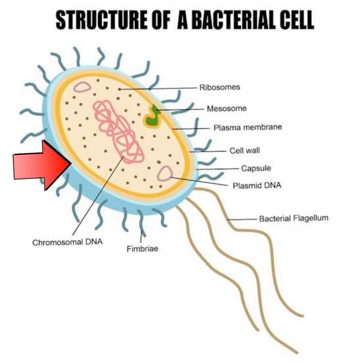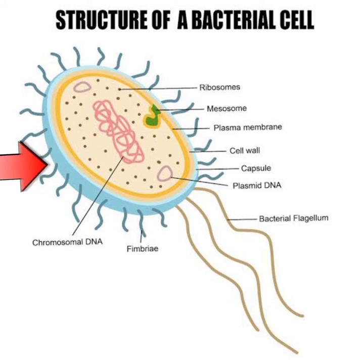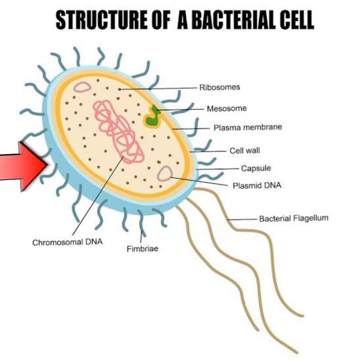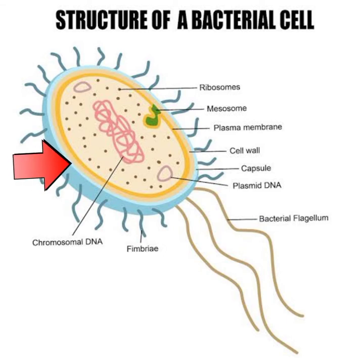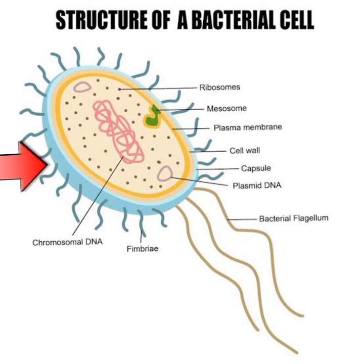Some pathogenic bacteria like E. coli and Streptococcus pneumoniae have an additional protective covering — the capsule — which makes them virulent. Non-capsulated variants of these organisms are avirulent and do not cause any diseases.